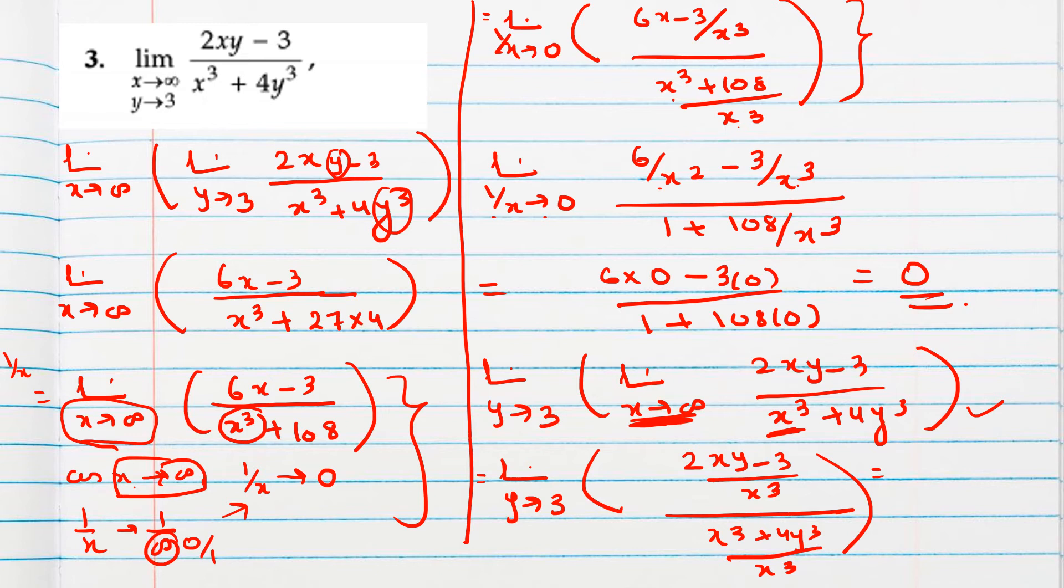So 2xy minus 3 by x cube and x cube plus 4y cube by x cube. So what we will get here? 2y by x square minus 3 by x cube, 1 plus 4y cube by x cube. Till now I didn't apply 1 by x, I am just rearranging the function.